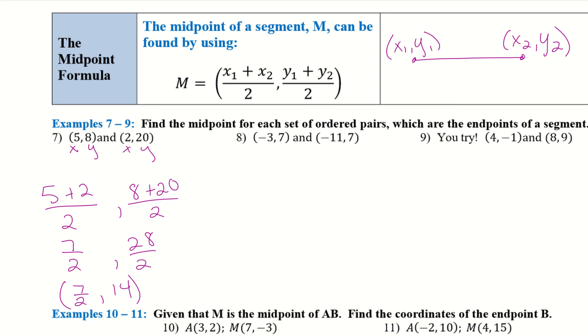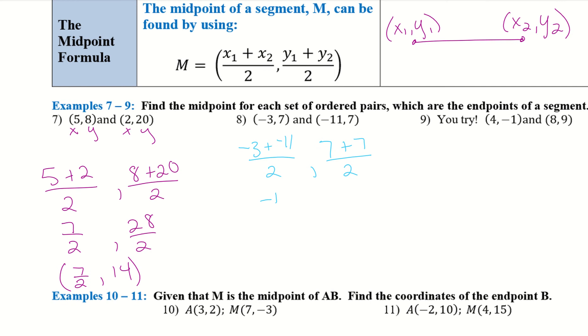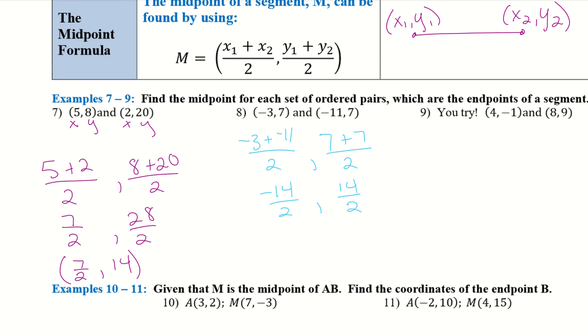Let's try this with number 8. So I have my x1, so negative 3, plus my x2, minus 11, all over 2, comma, y1, 7, plus y2, 7 again. So now I just have to combine these terms and simplify as far as I can. So I have negative 14 over 2, comma, 14 over 2. So negative 14 divided by 2 will give me negative 7, and then 14 over 2 will give me positive 7. So there is my midpoint from negative 3, 7 and negative 11, 7. So take a second and try number 9.